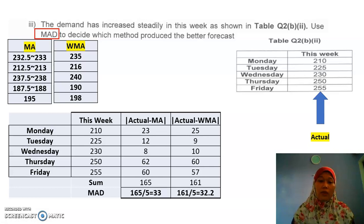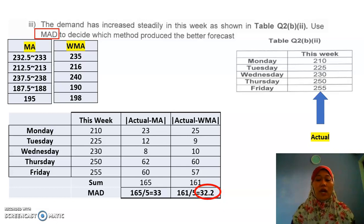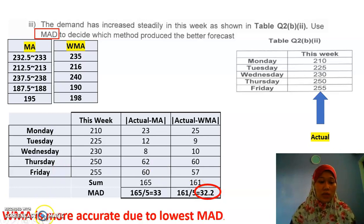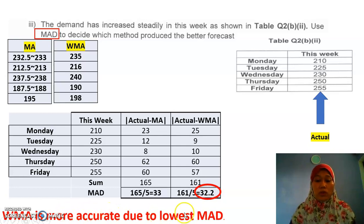Now we have to make a conclusion — which method or technique is the best? You must look for the smaller MAD. In this case, the smaller MAD belongs to weighted moving average, so the answer is that weighted moving average is more accurate or better due to the lowest or smallest MAD.